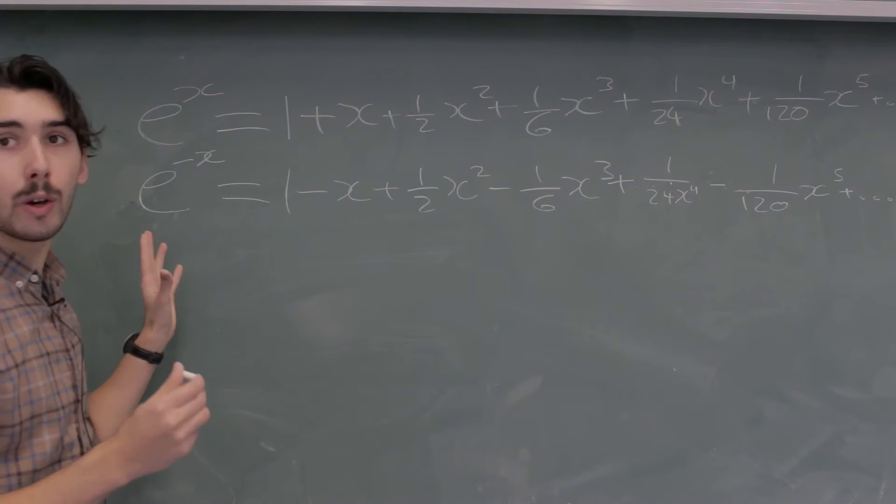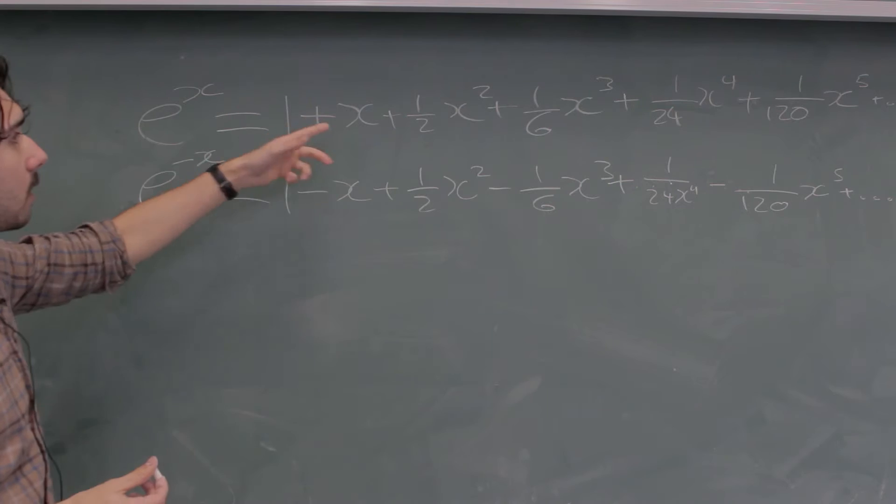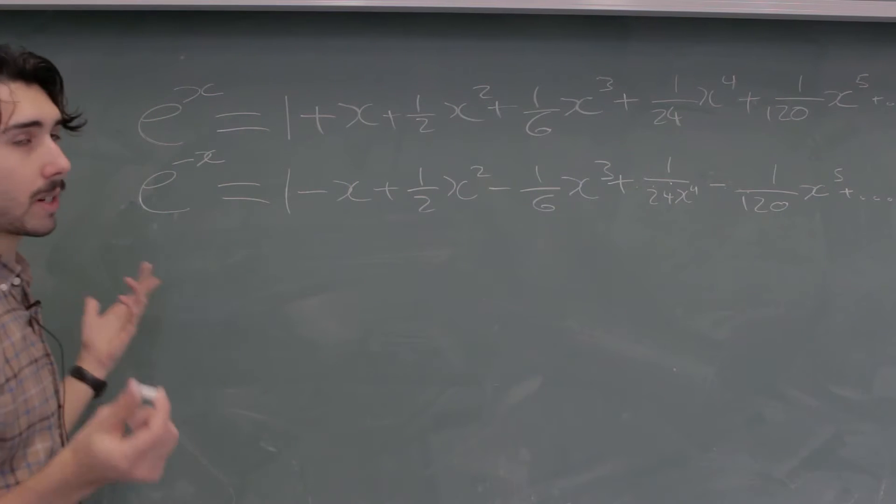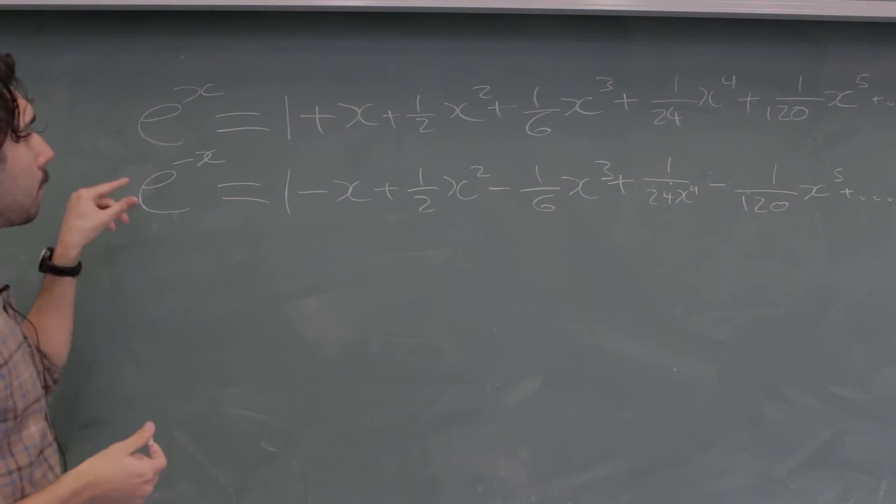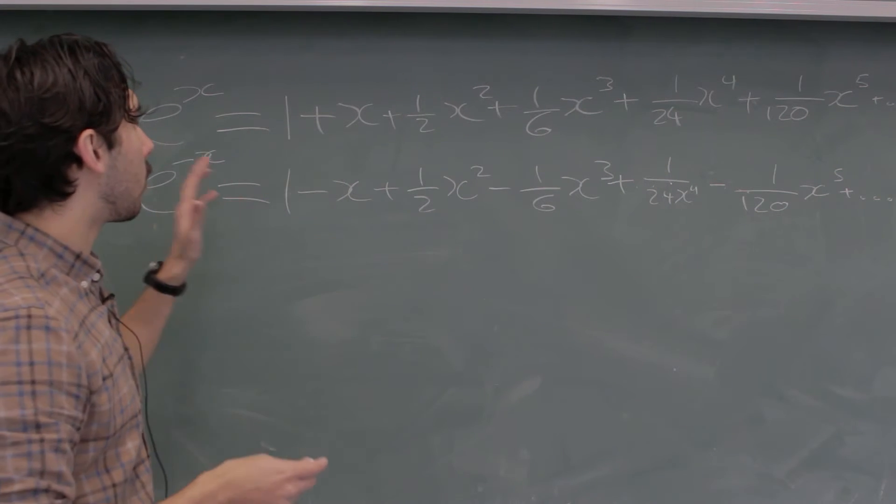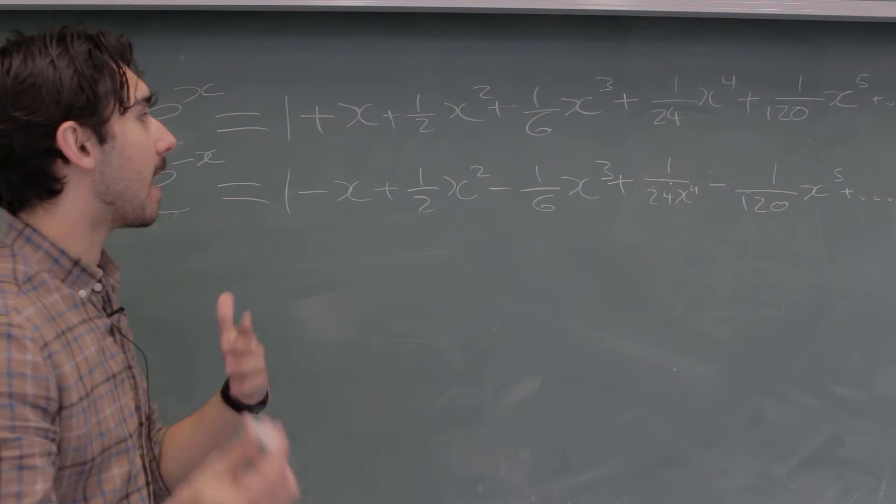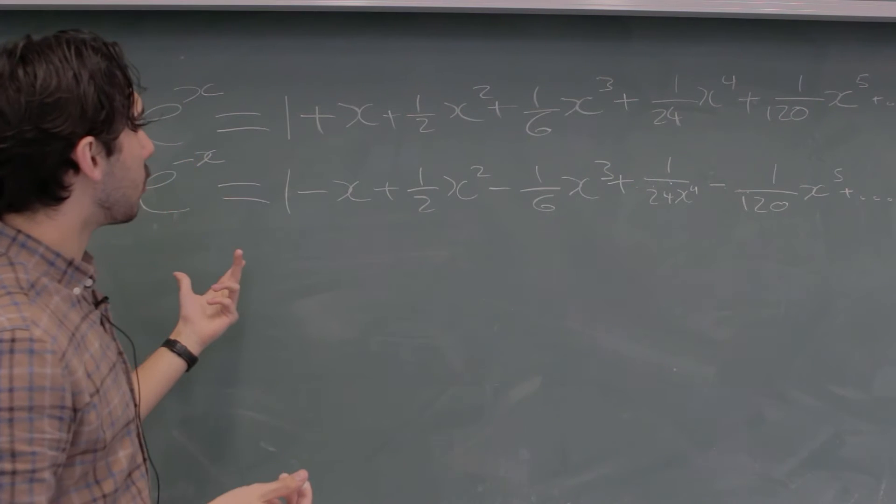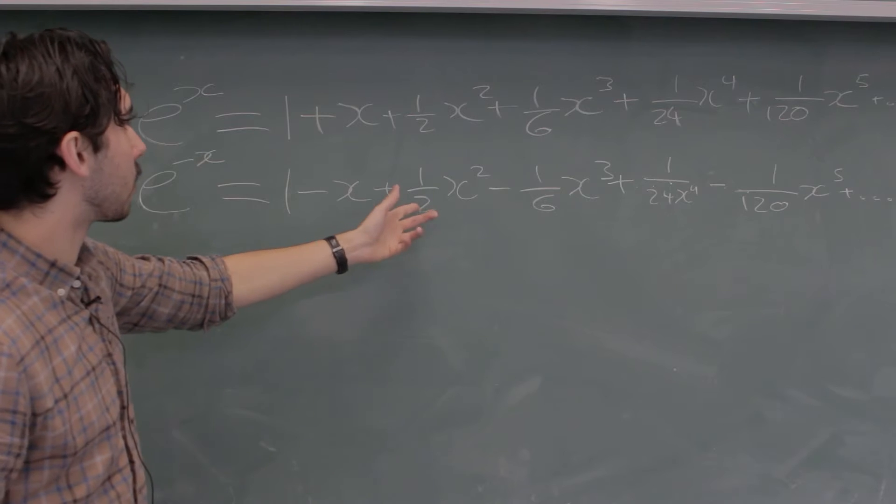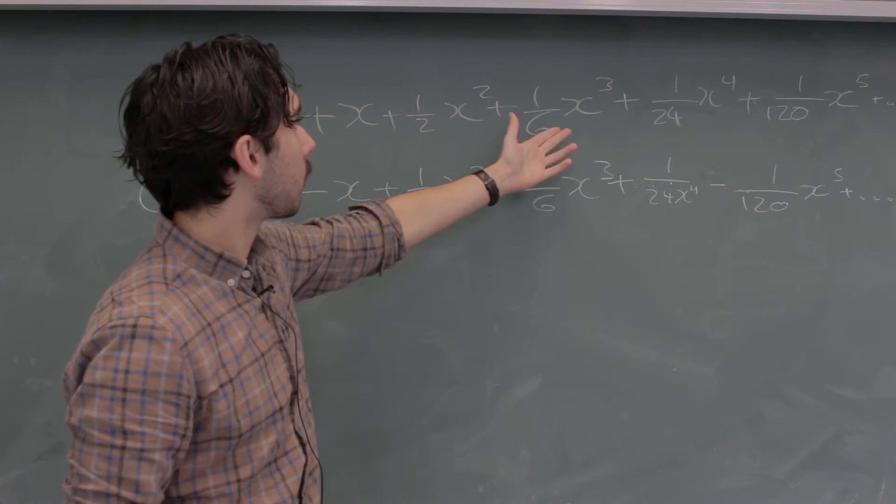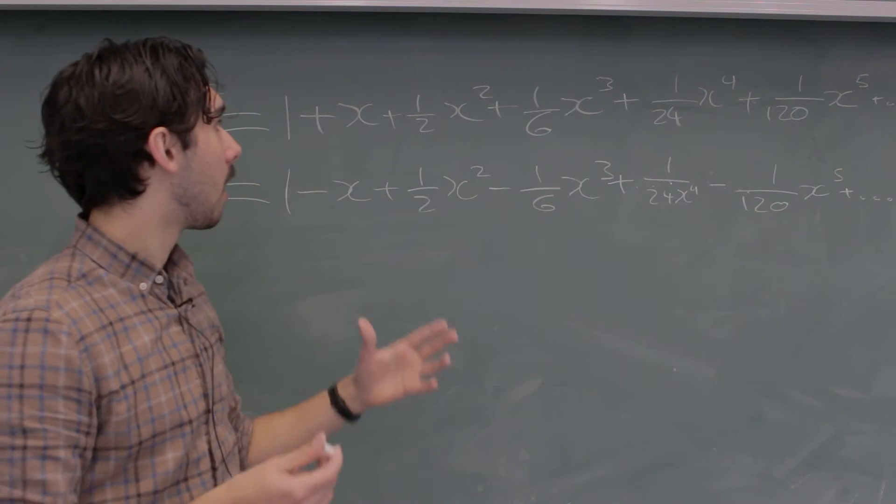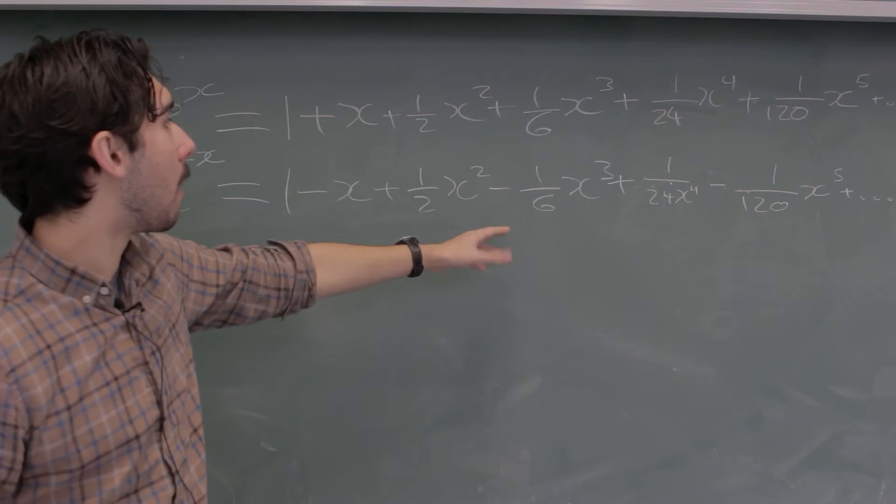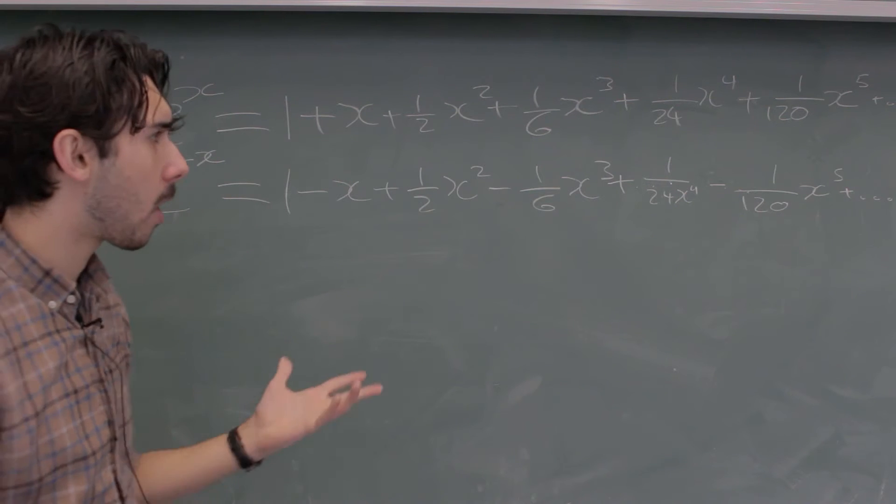So I've written out the first few terms of the Maclaurin series for e to the x, it's just this, right? Obviously these are all factorials, 2 factorial, 3, 4, 5 factorial. I've just written them as the actual number though because it doesn't really matter, it's fine. That means that e to the minus x is the same series but with the odd powers of x having a negative coefficient in front of them, and that's just because we're replacing x with a minus x, so of course it's going to just bring the minus out to the front of the term, right? So like we have a sixth x cubed here, well minus x cubed is minus x cubed. You can see that the minus power will come out when you substitute minus x in, so I hope that that's obvious.